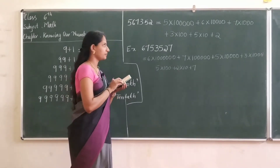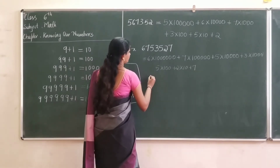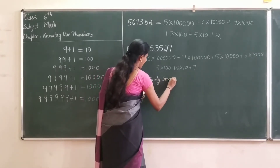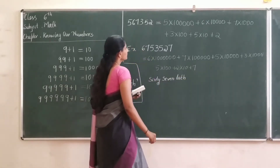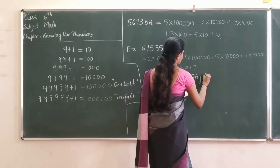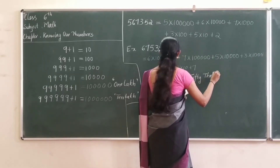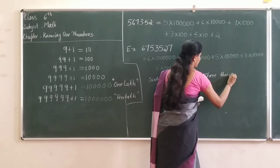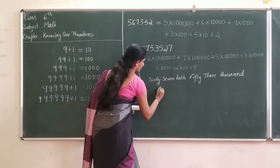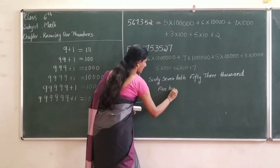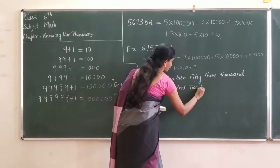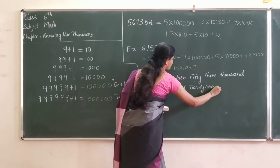Can you write it as a number name? That is: sixty-seven lakh, fifty-three thousand, five hundred twenty-seven. Correct.